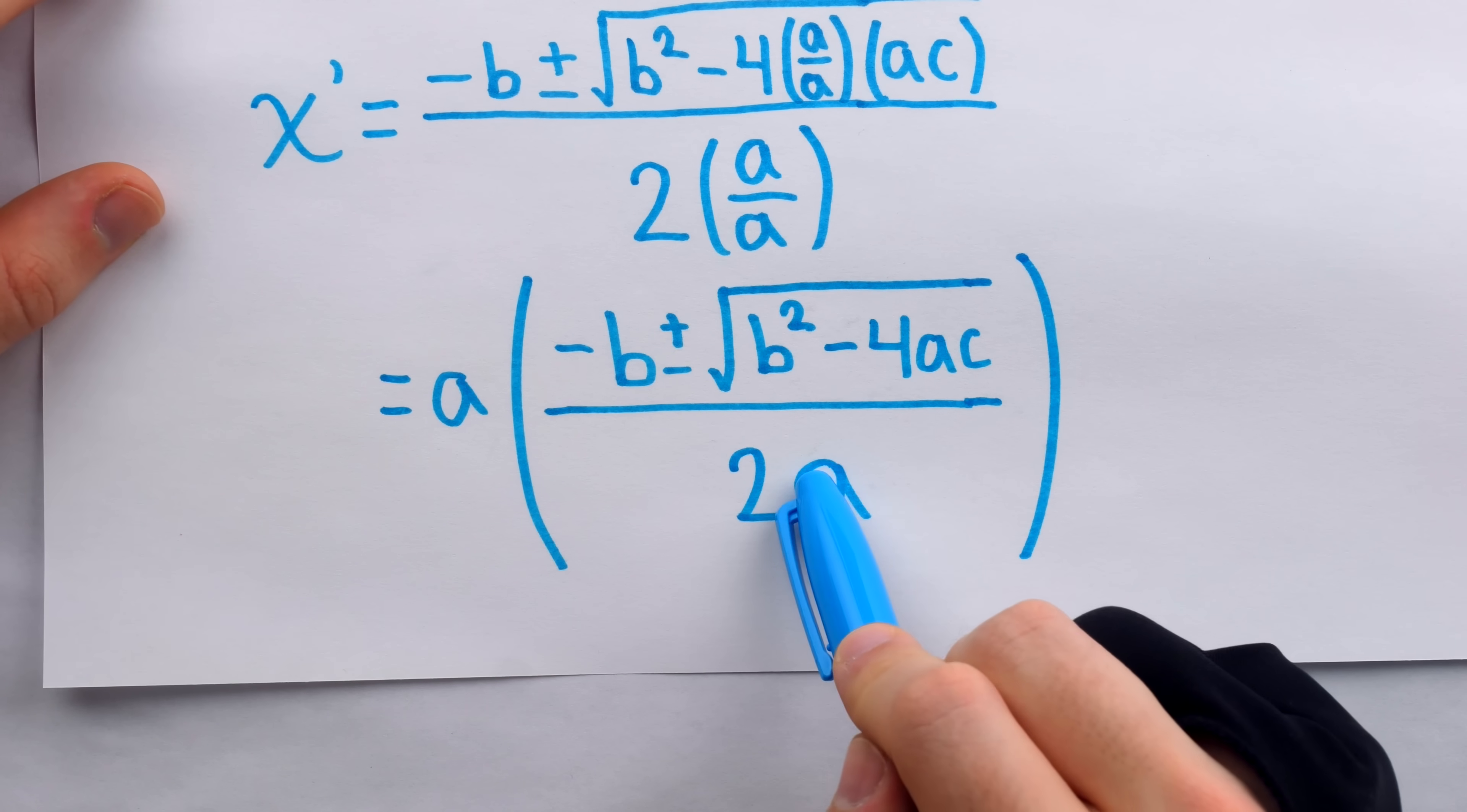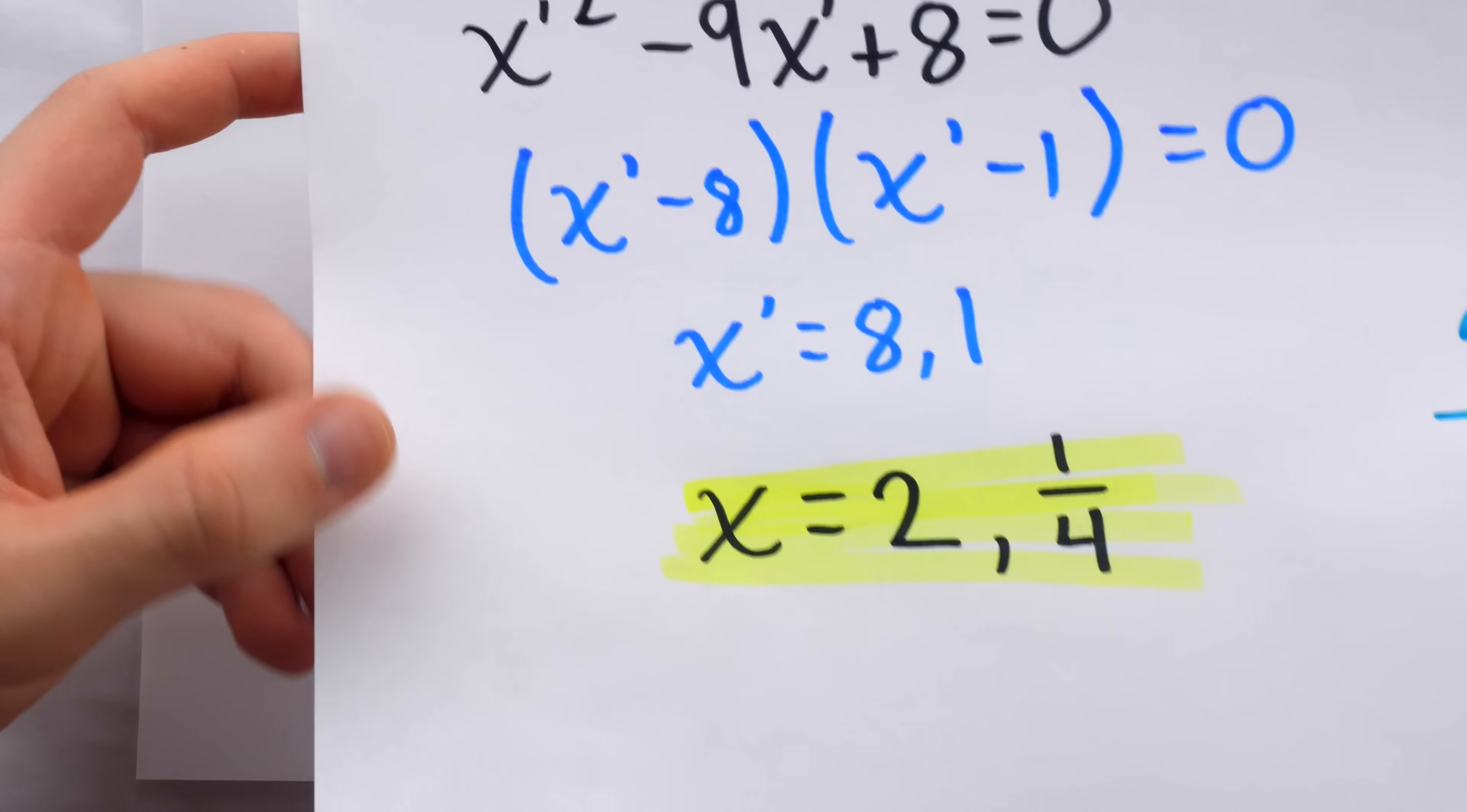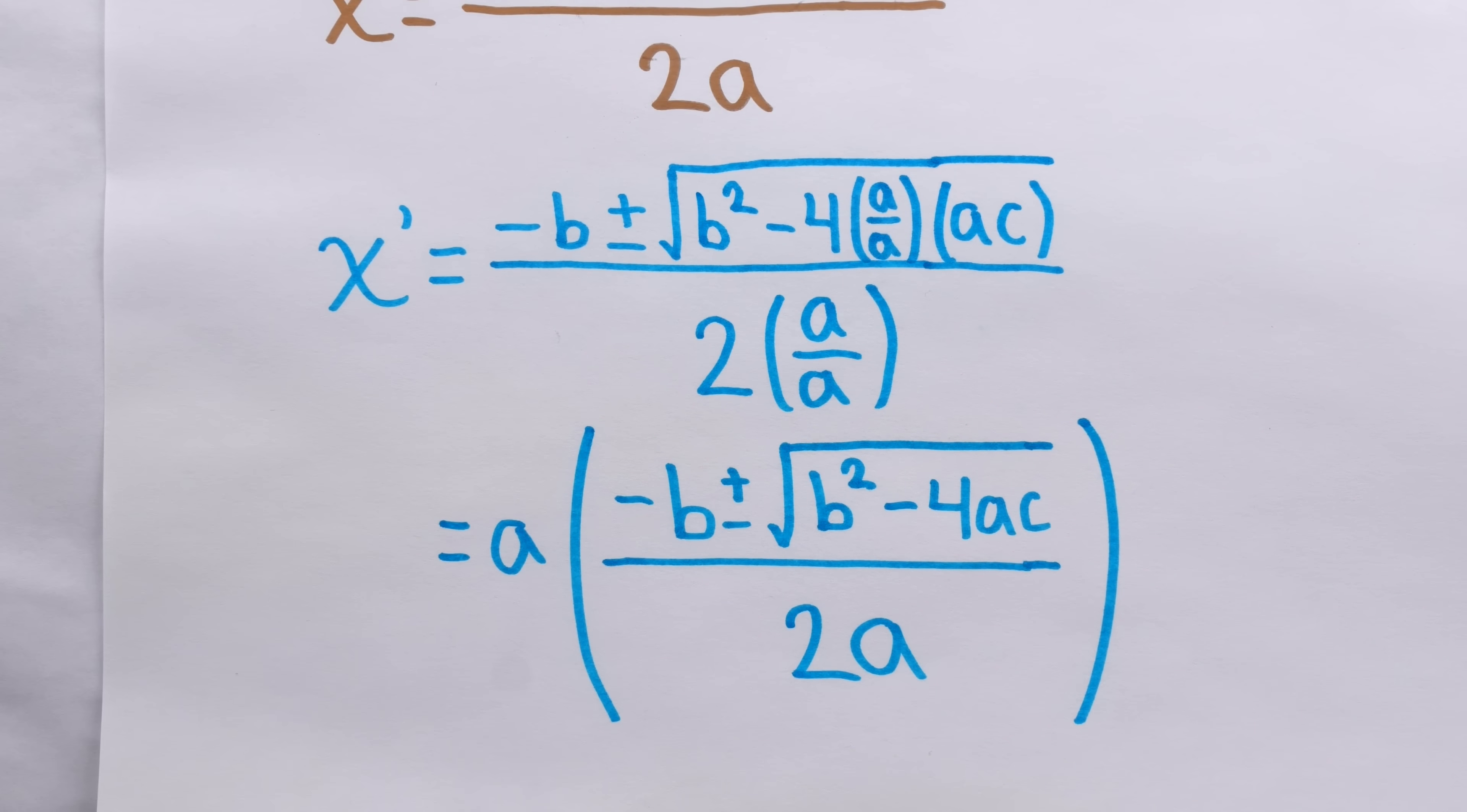And does that look familiar? Well, yes, that's just the quadratic formula. These are the values of x. So how does x prime relate to x? It's just the values of x exactly, but multiplied by that leading coefficient of a. That's why the final step when using this trick is to divide by the leading coefficient. We have to divide by it so that we're left with the original solutions, the values of x, that we're actually looking for. Here at the end, we divided by the leading coefficient of 4. And in that first example, we divided by the leading coefficient of 6. And now you can see why.